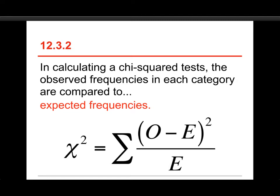And again, they're calculated differently depending on whether you're using a single variable goodness-of-fit test or a two-variable test for independence. But once you get the expected frequencies for either one, the formula for chi-squared is just the same.